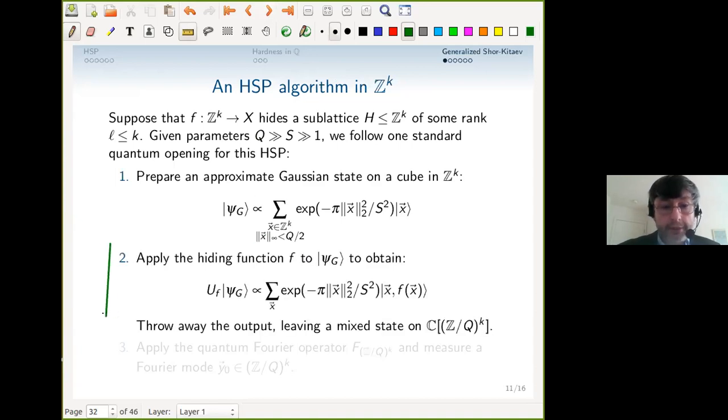Second step in the standard strategy: apply the hiding function to obtain this state where we have evaluated the hiding function in superposition using a unitary dilation of f. Although this is a peculiar way to say it, throw away the output and you're left with a mixed state—a partially measured state on the input register.